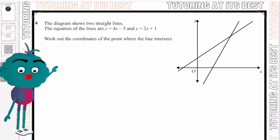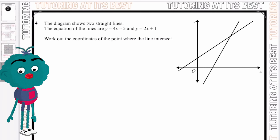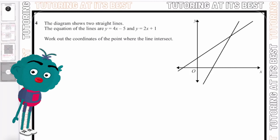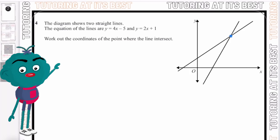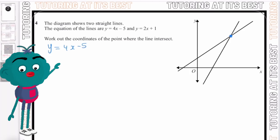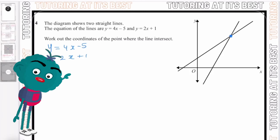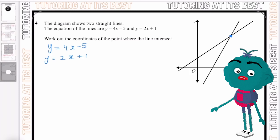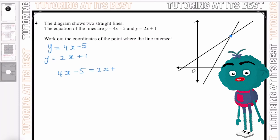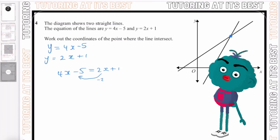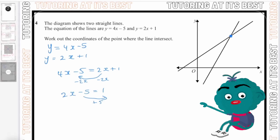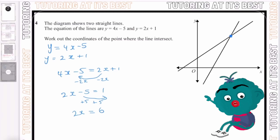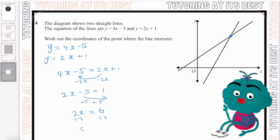Let's move on to question 4. We need to work out the coordinates of the point where the lines intersect, but this time the axis values aren't provided. The two equations are y equals 4x minus 5 and y equals 2x plus 1. Since both equal y, we set them equal: 4x minus 5 equals 2x plus 1. Subtracting 2x from both sides gives 2x minus 5 equals 1. Adding 5 gives 2x equals 6, so x equals 3.